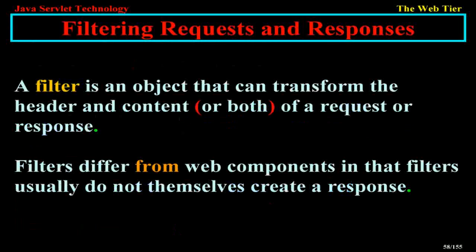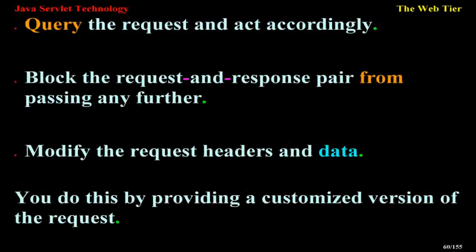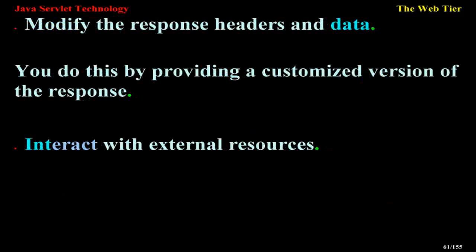Filtering requests and responses. A filter is an object that can transform the header and content, or both, of a request or response. Filters differ from web components in that filters usually do not themselves create a response. Instead, a filter provides functionality that can be attached to any kind of web resource. Consequently, a filter should not have any dependencies on a web resource for which it is acting as a filter. The main tasks that a filter can perform include: querying the request and acting accordingly, blocking the request and response pair from passing any further, modifying the request headers and data by providing a customized version of the request, modifying the response headers and data by providing a customized version of the response, and interacting with external resources.